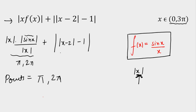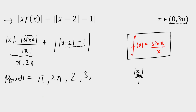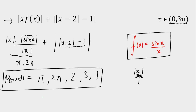For the second function, we find values of x where the inside of the mod is zero. At x = 2, the inner mod |x − 2| = 0, so the expression is zero. At x = 3: |3 − 2| = 1, and 1 − 1 = 0. At x = 1: |1 − 2| = 1, and 1 − 1 = 0. So three additional points: 1, 2, and 3. The total number of points of non-differentiability are π, 2π, 1, 2, and 3 — that is 5 points.